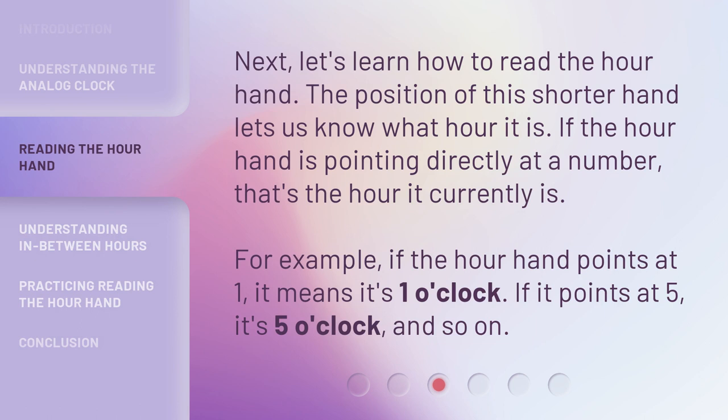Next, let's learn how to read the hour hand. The position of this shorter hand lets us know what hour it is. If the hour hand is pointing directly at a number, that's the hour it currently is. For example, if the hour hand points at 1, it means it's 1 o'clock. If it points at 5, it's 5 o'clock, and so on.